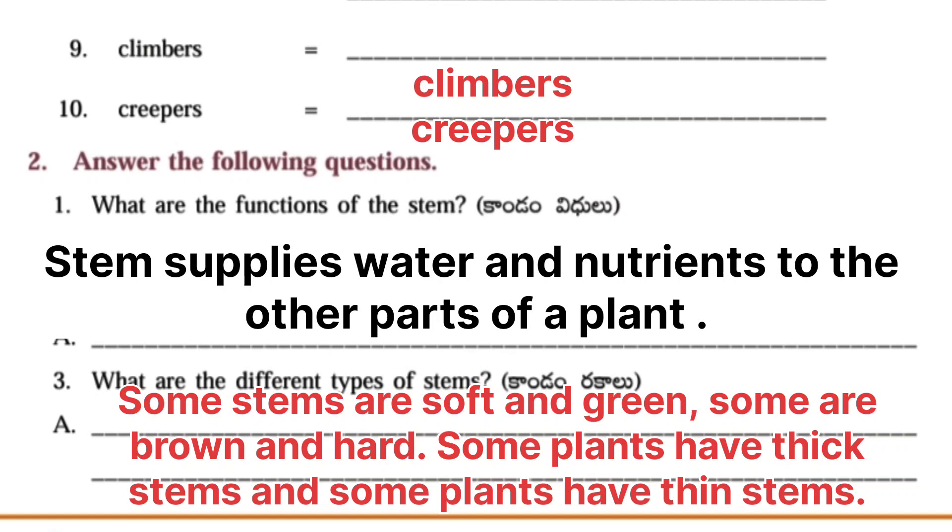What are the functions of the stem? Answer: Stem supplies water and nutrients to the other parts of a plant. Second question: What are the different types of stems? Answer: Some stems are soft and green, some are brown and hard. Some plants have thick stems and some plants have thin stems.